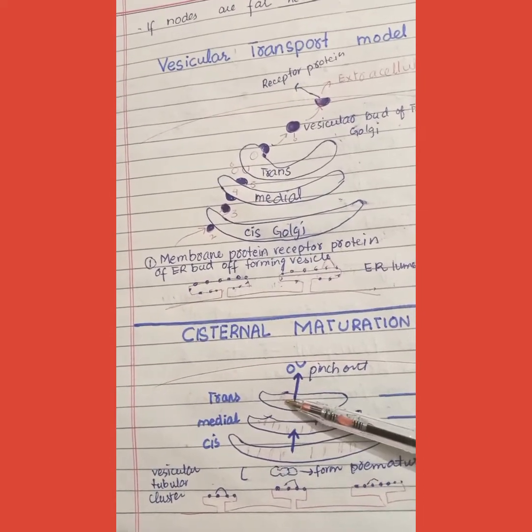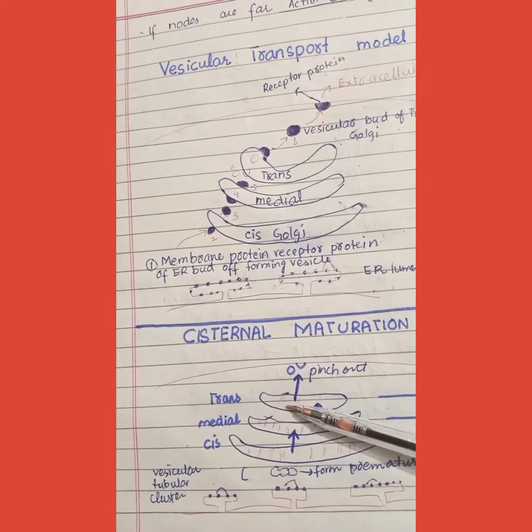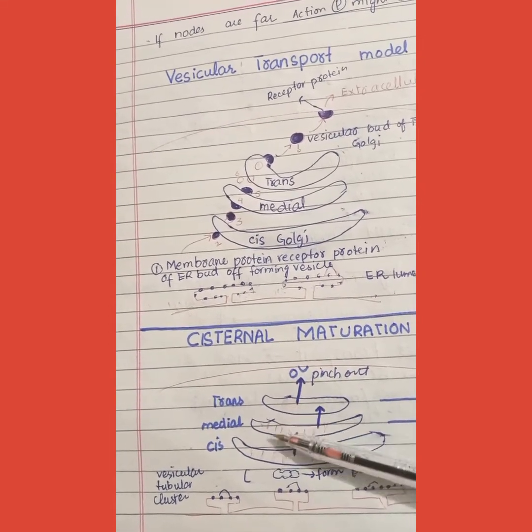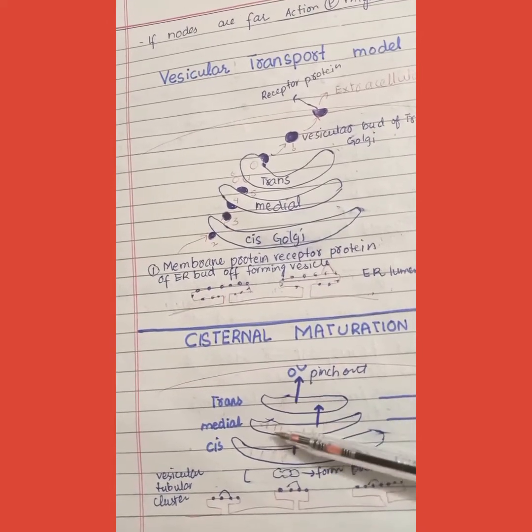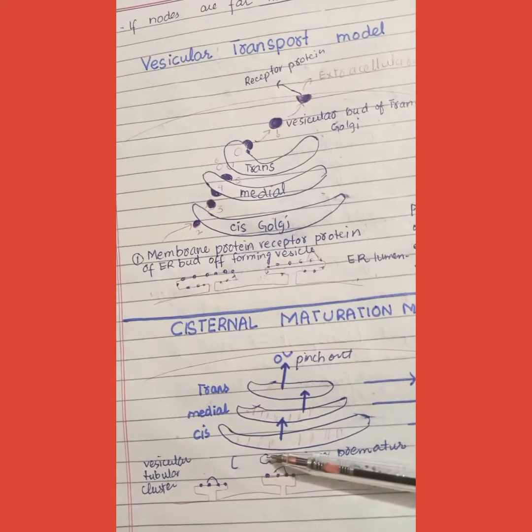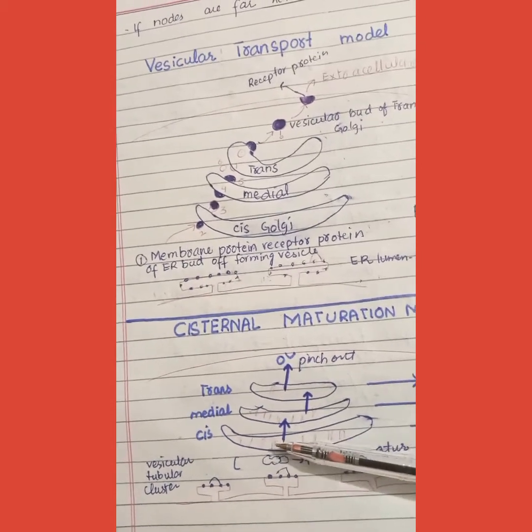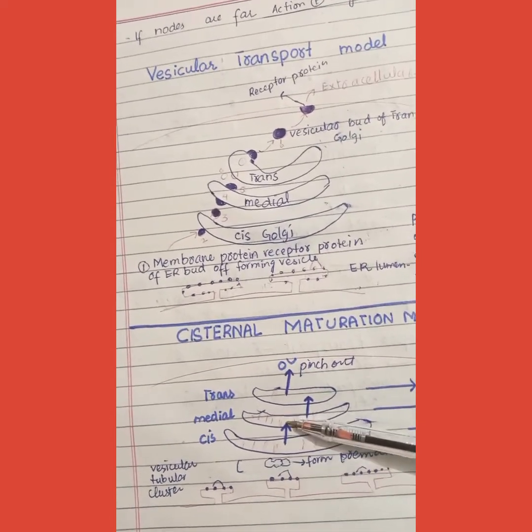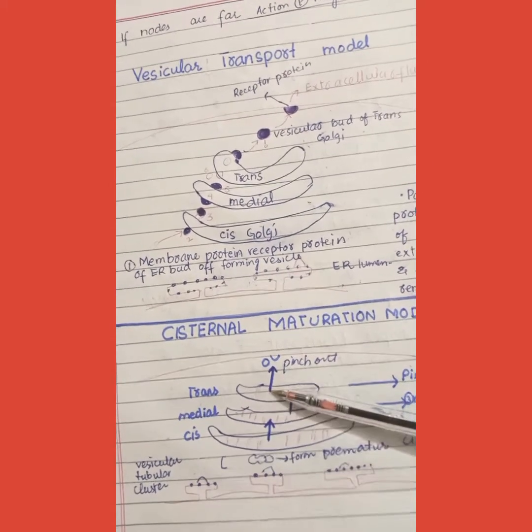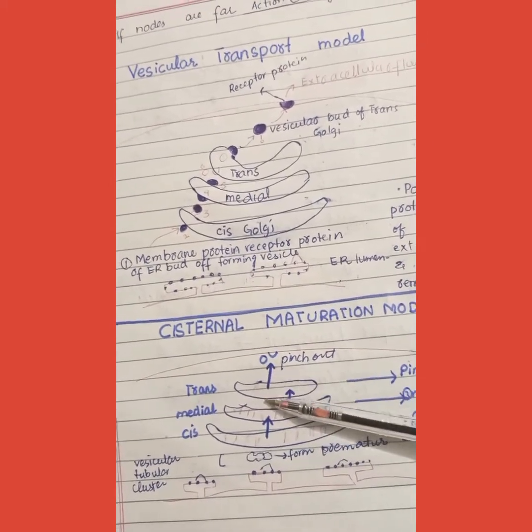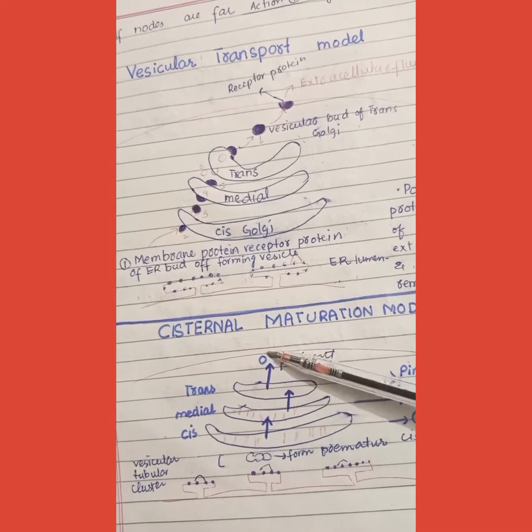The older part of the Golgi has its content, which is a premature cyst. The cyst becomes medial, and the medial is converted into trans. At last, the trans pinches out and fuses with the plasma membrane.